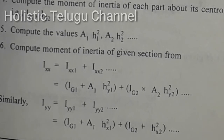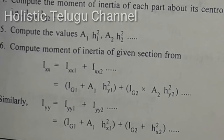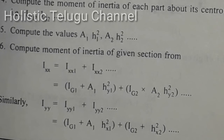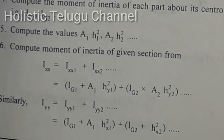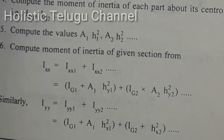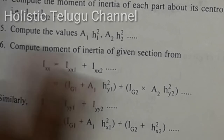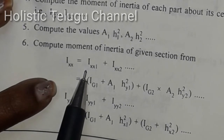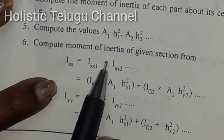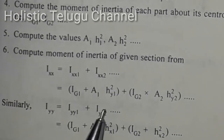We will calculate the values of A1, A2, A3 and the corresponding distances H1, H2, H3. For each part: A1 with H1, A2 with H2, and A3 with H3, applying the parallel axis theorem to each component.